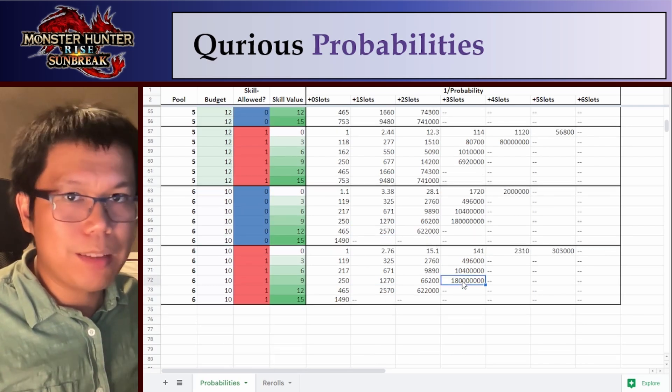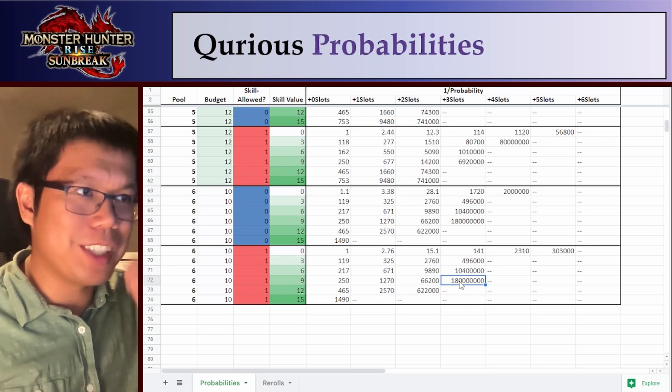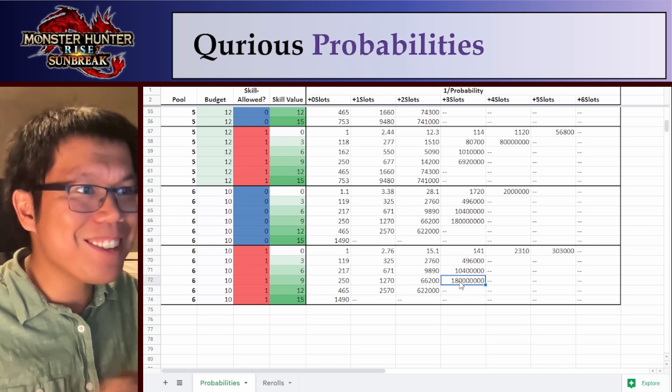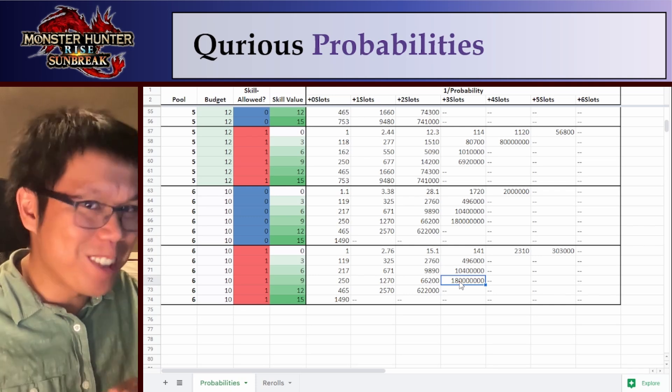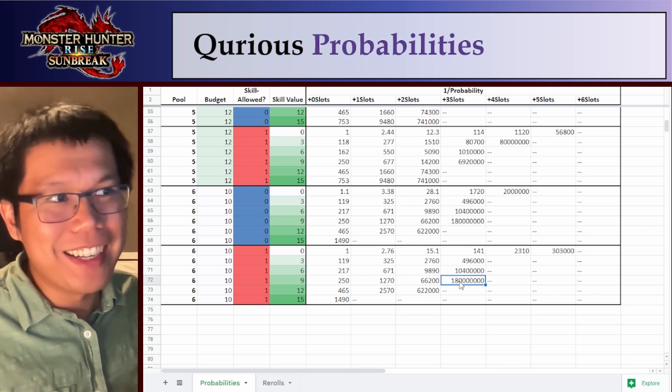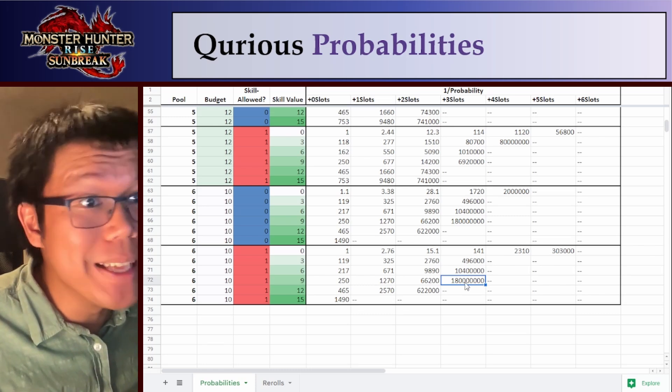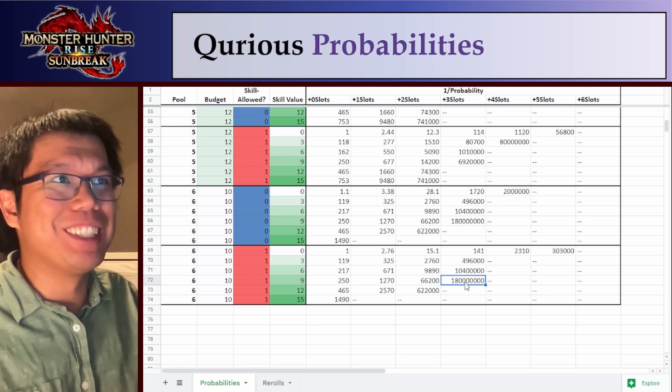The really high values I didn't trust as much because that's just chance whether or not the computer rolled it or not. Just assume if there's a dash or if there's a really big number, you just aren't going to get it practically. I would never try to get something with a one in 180 million chance. I'm not going to try for a plus three slots.